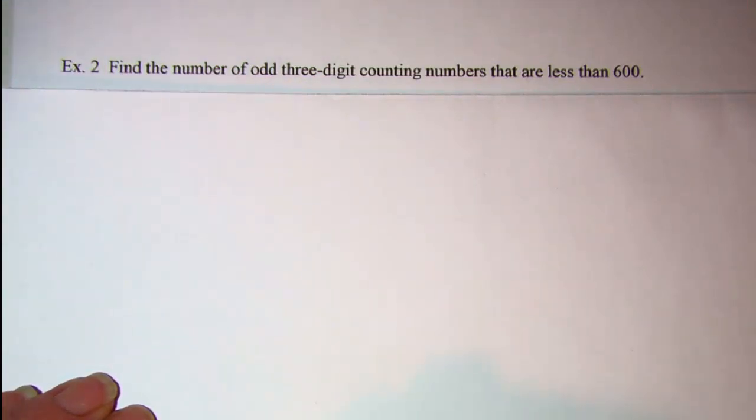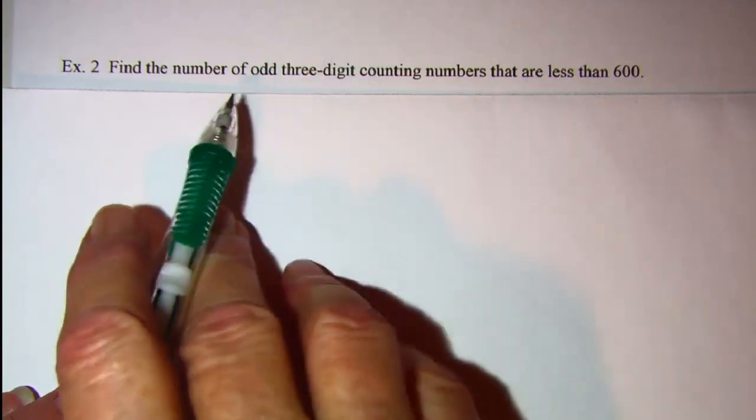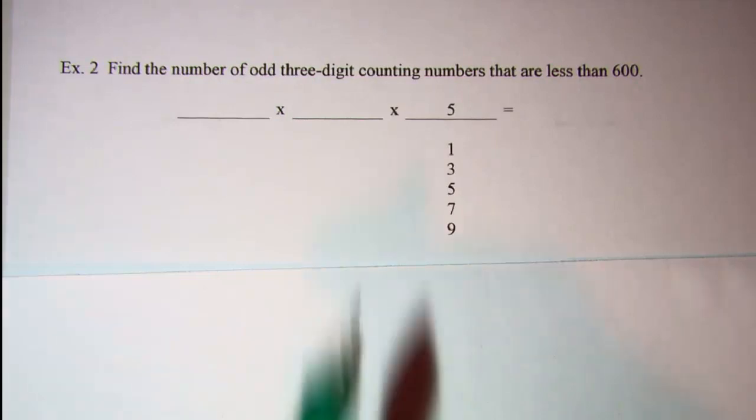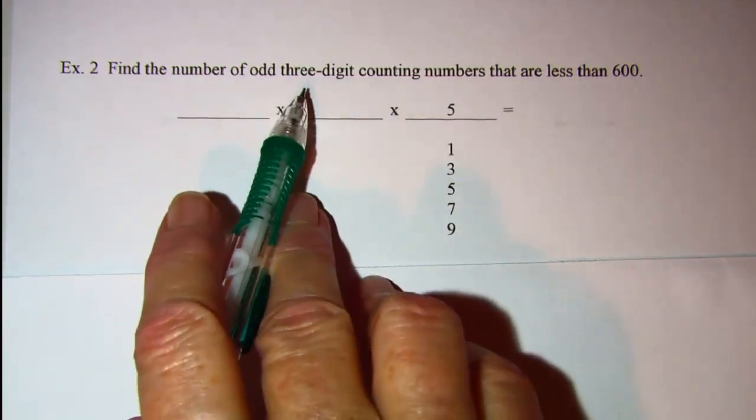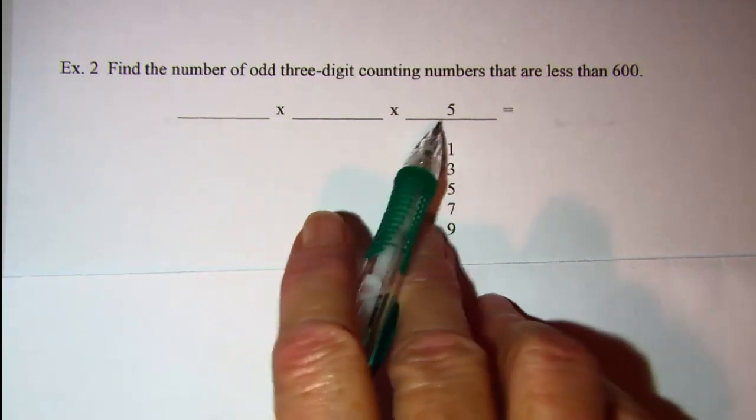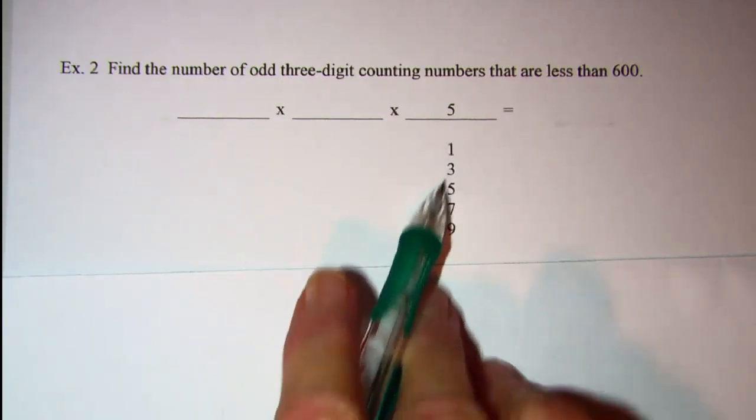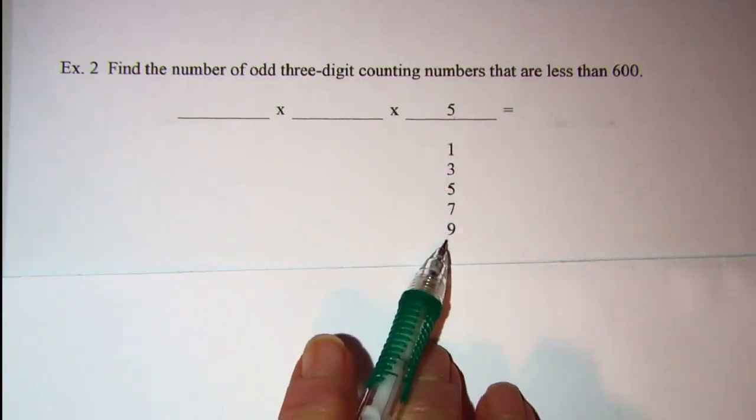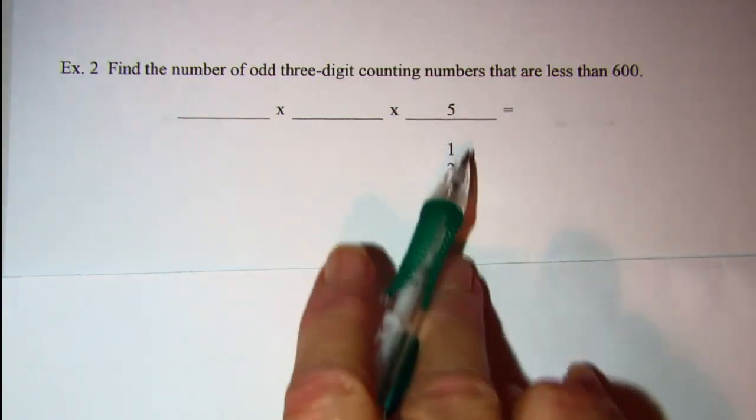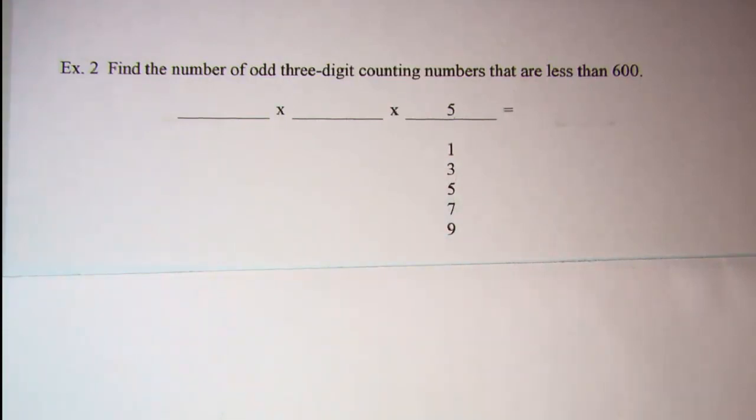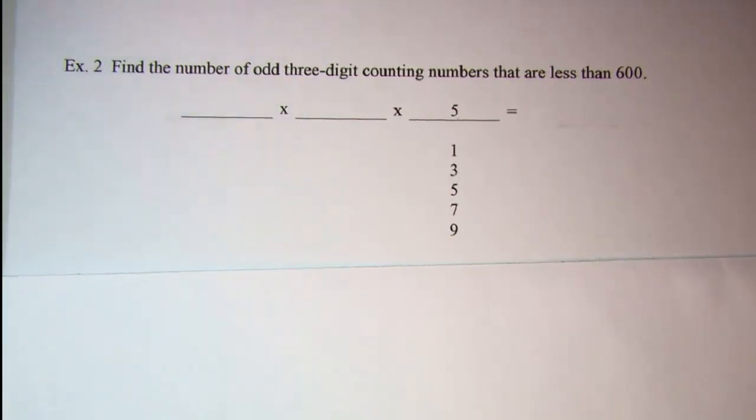My first step would be to fill in to make sure it's an odd number. I have to have three digits, which means I have three spots to fill. And in order for it to be odd, this last digit needs to be filled in from one of these five digits in order for it to be odd. So I have five ways to choose that number for that position.